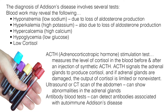Addison's disease involves several tests. Blood work may reveal hyponatremia (low sodium) and hyperkalemia (high potassium), both due to the loss of aldosterone production, as well as hypercalcemia (high calcium), hypoglycemia (low glucose), and low cortisol. The ACTH, or adrenocorticotropic hormone, stimulation test measures the level of cortisol in the blood before and after an injection of synthetic ACTH. ACTH signals the adrenal glands to produce cortisol, and if the adrenal glands are damaged, the output of cortisol is limited or non-existent. An ultrasound or CT scan of the abdomen may be done to show abnormalities in the adrenal glands, and antibody blood tests can detect antibodies associated with autoimmune Addison's disease.